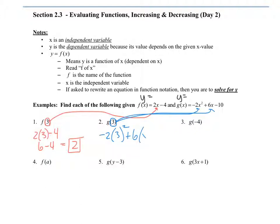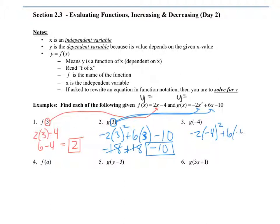It is kind of doing a T-chart. This is supposed to be a 3 in here, then minus 10. Do exponents first — so this is 9, times negative 2 is negative 18. Always do the exponents first before you multiply, then plus 18, then minus 10. The 18s cancel and we end up with negative 10. For negative 4: square the number first, which gives positive 16, then multiply by negative 2, which gives negative 32. Then positive 6 times negative 4 is negative 24, minus 10. Adding all those negatives together gives negative 66.